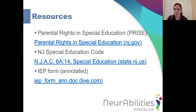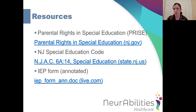I've included some resources for parents. The first is the PRISE booklet — parental rights in special education — which you'll be given at your identification meeting and every year. It's very parent-friendly and lays out the steps involved, as well as the steps to follow if you're in disagreement with the school district. I also included a link to the New Jersey special education code, which spells out everything in law. And there's a link for a generic annotated IEP form — every district's form looks a little different, but they all must contain the same information, so this will help you familiarize yourself with the form prior to any meetings you attend.